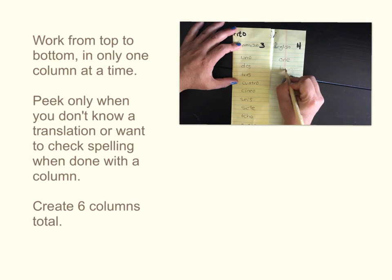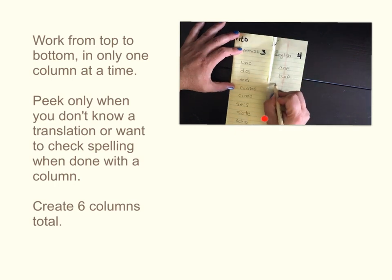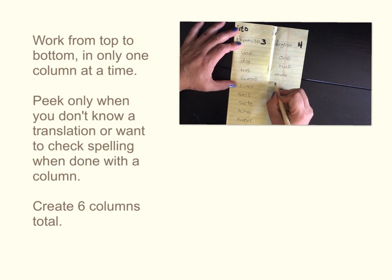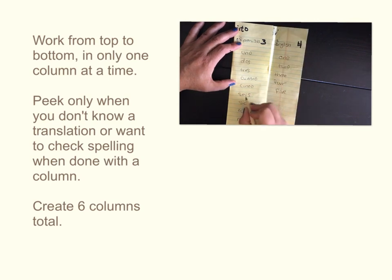Notice again we only have two columns showing: one with one language and a blank one with the other language. This is the second time we've written the words in English, so it should be a little bit easier.